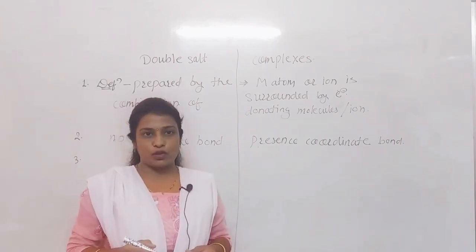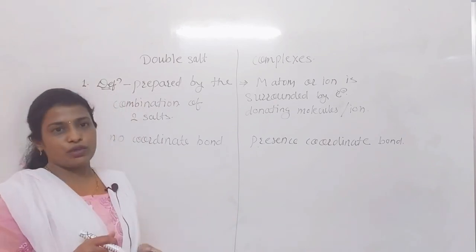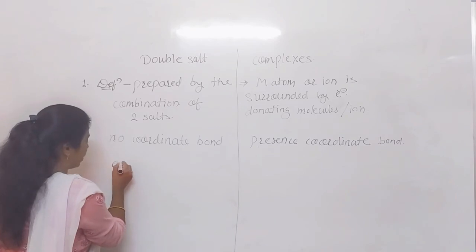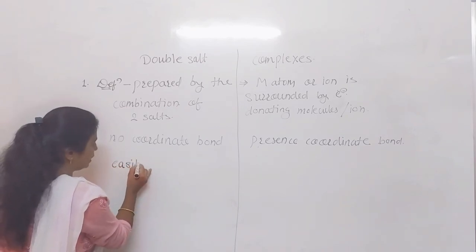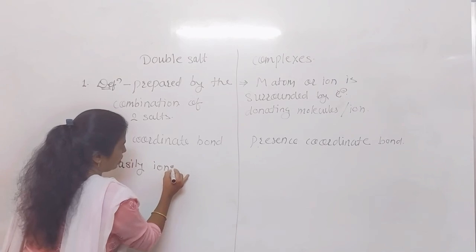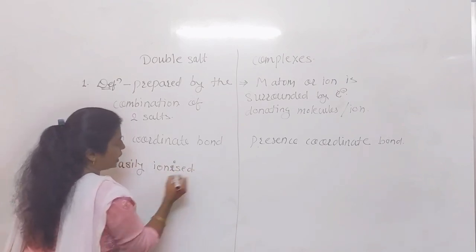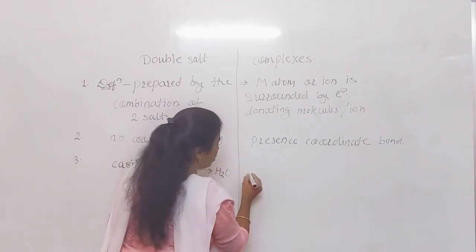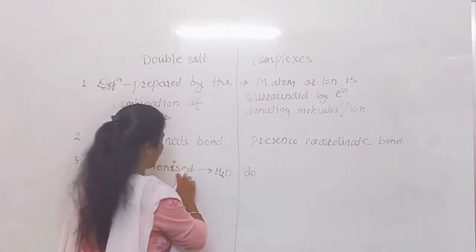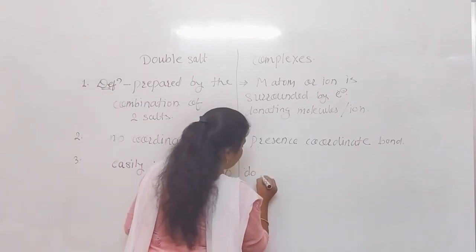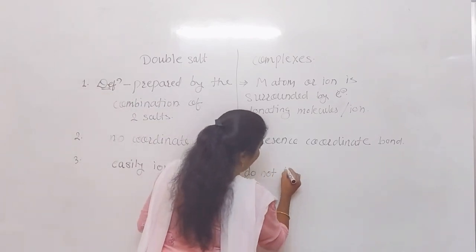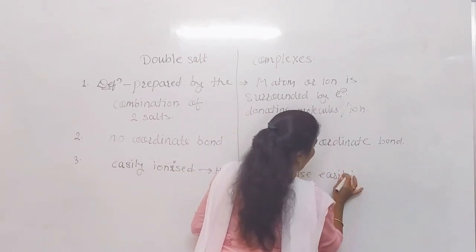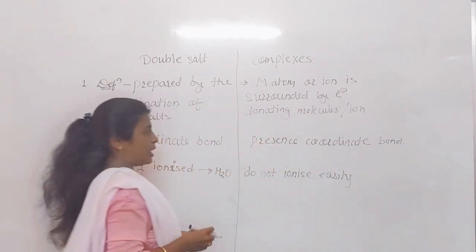Third point: if we consider double salts, when we add them into water, they get easily ionized — meaning they form ions easily. But coordination compounds do not ionize easily when added into water.